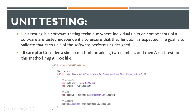Unit testing is a software testing technique where individual units or components of a software are tested independently to ensure they function as expected. The goal is to validate that each unit of the software performs as designed. Units are the controllers, your services, your repositories — these are what we generally test in unit testing.